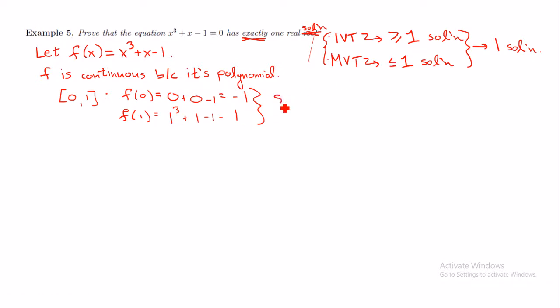So, since f(0) is less than zero, which is less than f(1), we conclude that there is some c between zero and one so that f(c) equals zero exactly. So that's telling us that this has at least one solution. We have at least one solution.